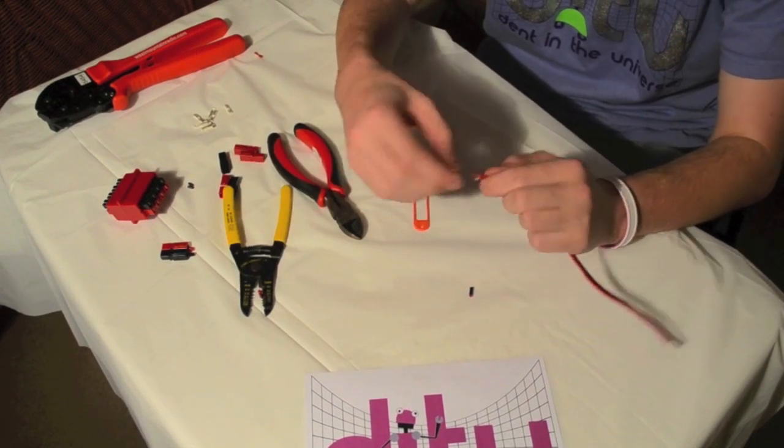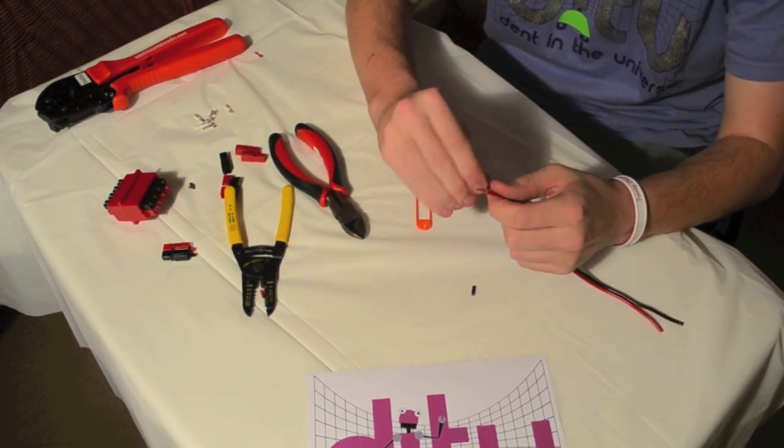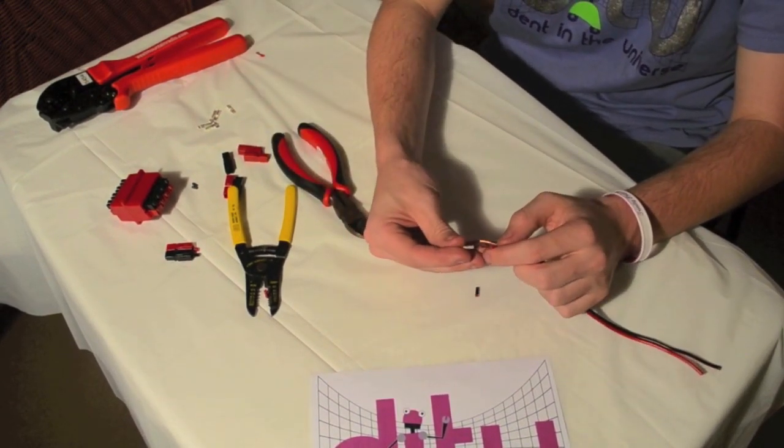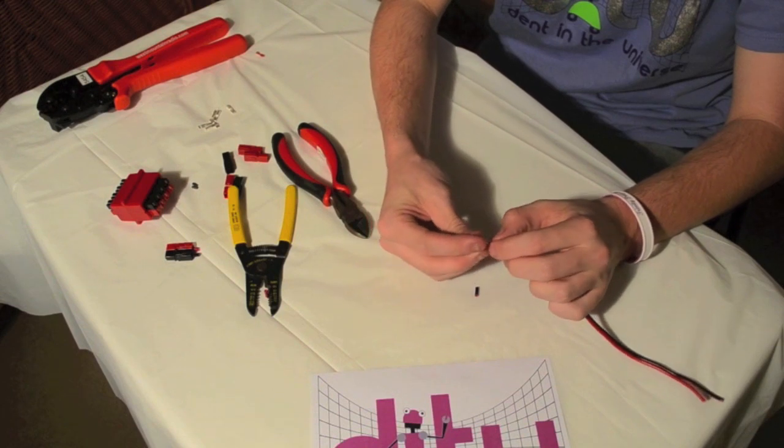After this, twist your leads to make sure all the wires are grouped together and you have no fraying. Then take your metal Anderson connector part and slip it over the wire.